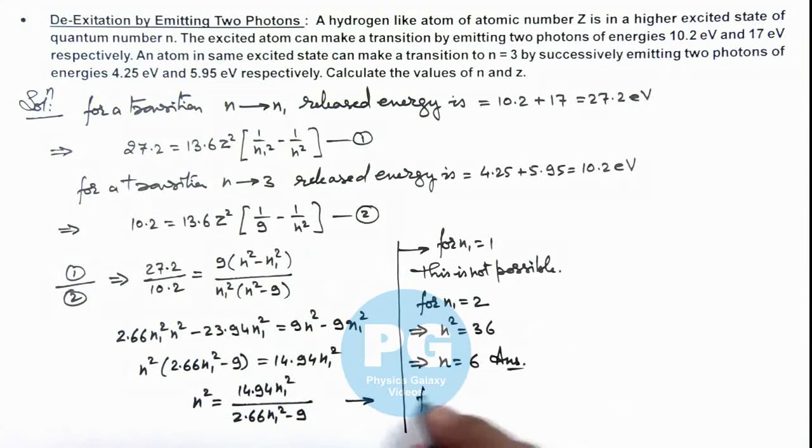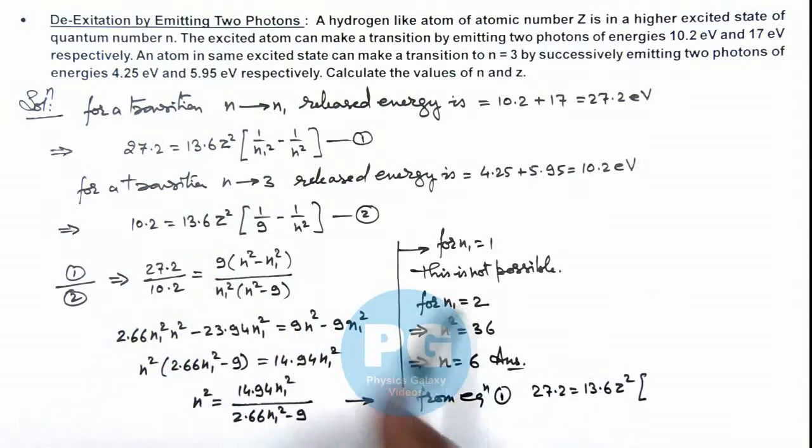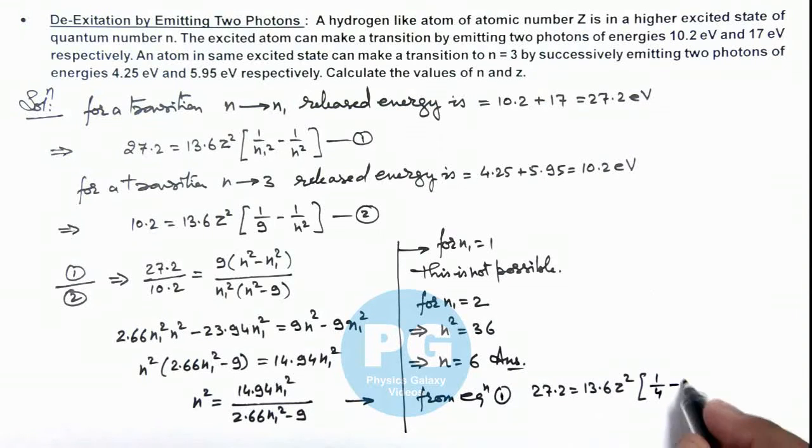We can write from equation 1, if we substitute the value of this is 27.2 is 13.6 z square multiplied by 1 by here value of n1 is taken as 2 and n as 6. So this will be 1 by 4 minus 1 by 36. And on simplifying this value we get the value of z square is equal to 9, or the value of z should be 3, that is another result of this problem.